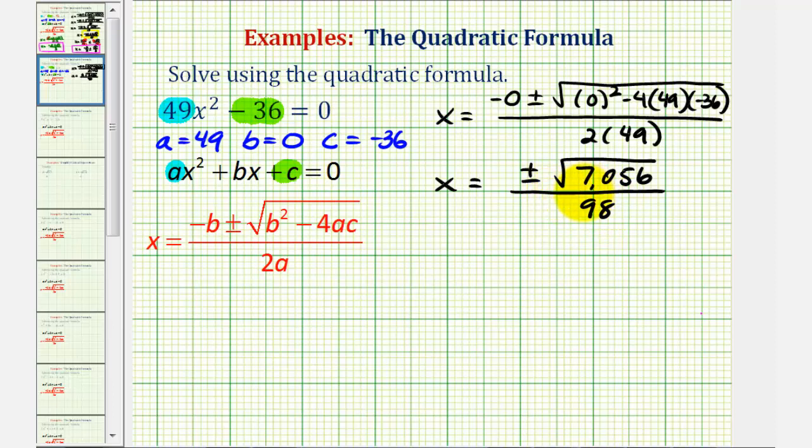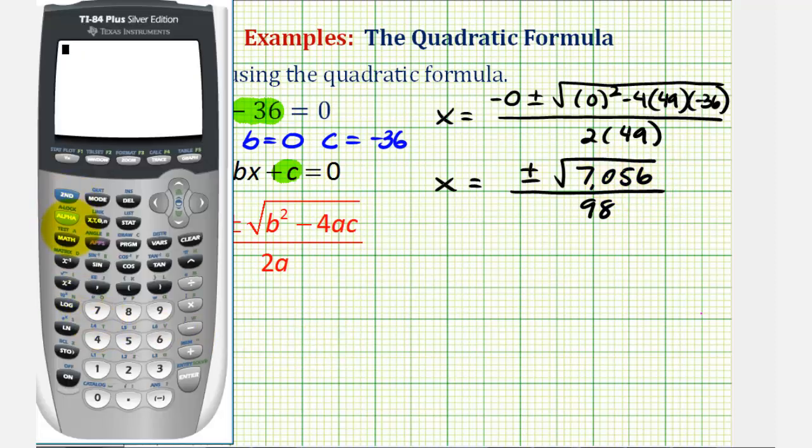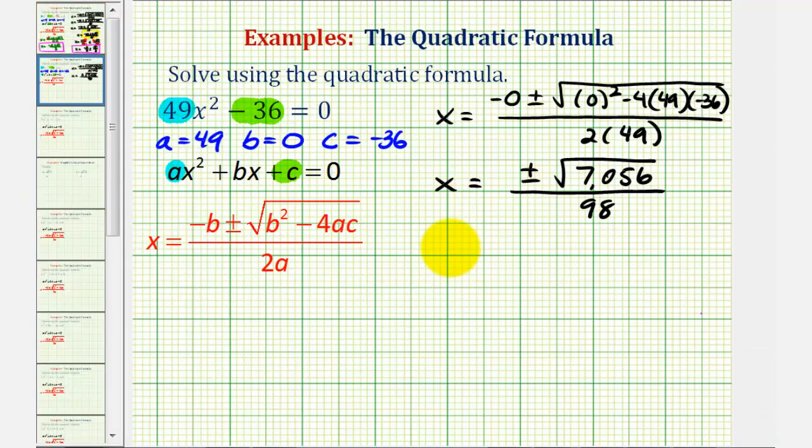Now it's difficult to recognize, but 7056 is a perfect square. If we take the square root of 7056, it comes out perfectly to 84, which means x is equal to plus or minus 84 divided by 98.